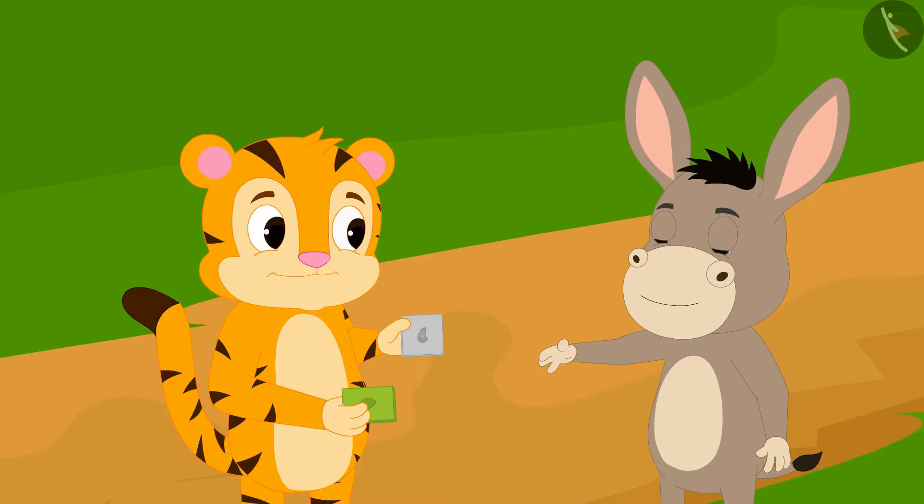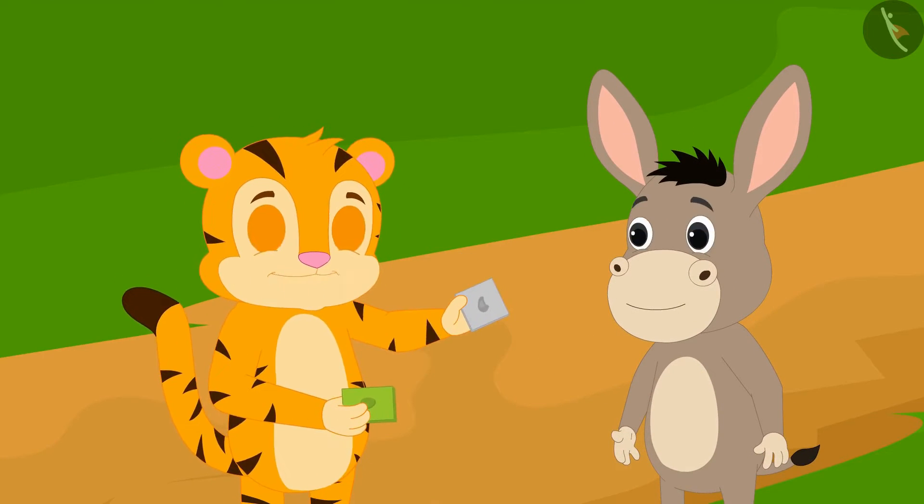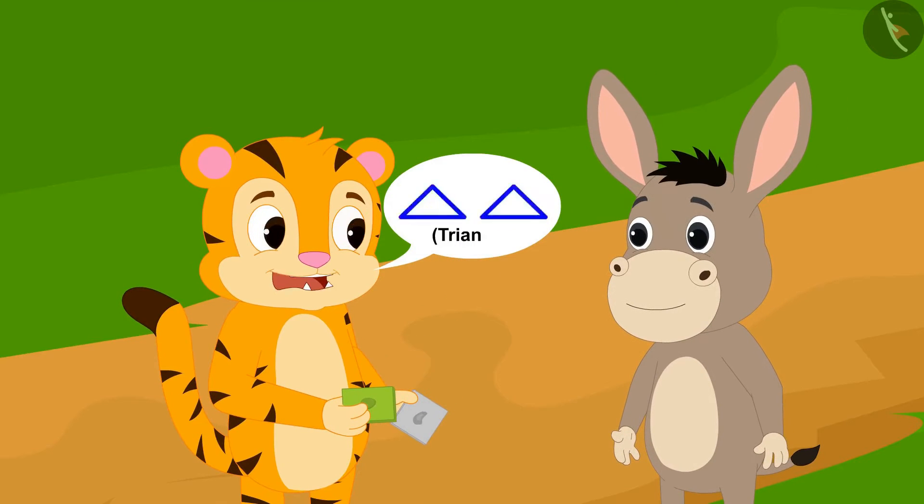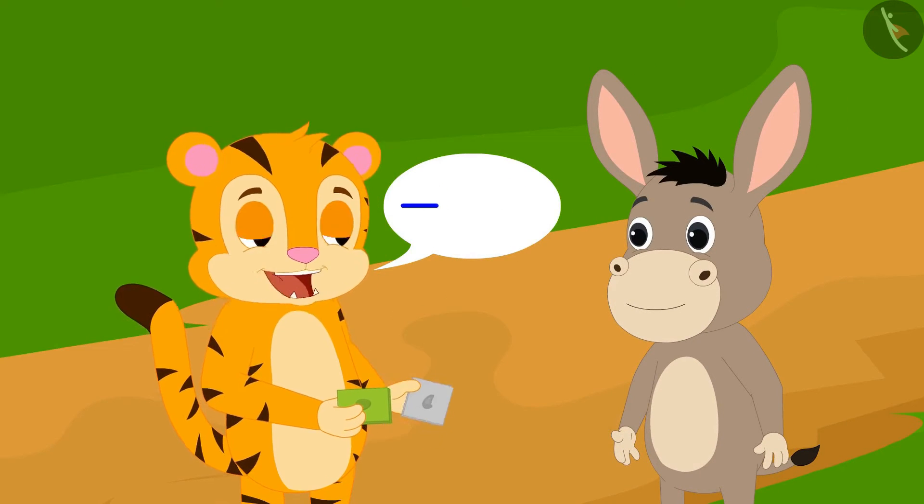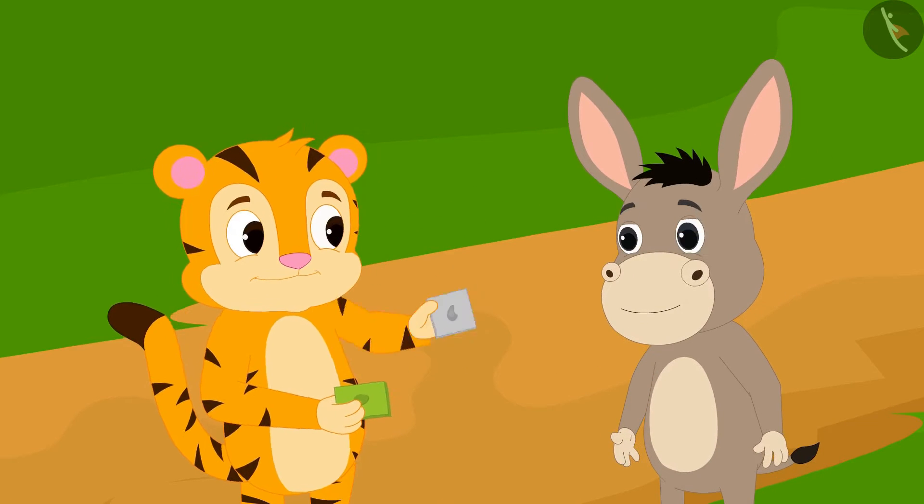Bholla accepted Sher Khan's condition. Can you make this cashew barfi into two triangles of equal area by drawing a straight line? Sher Khan asked Bholla.